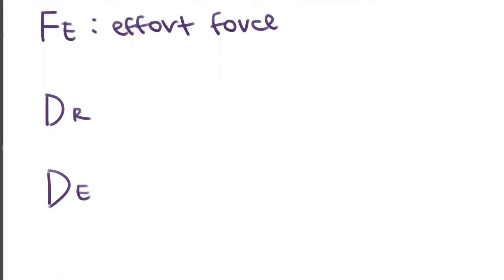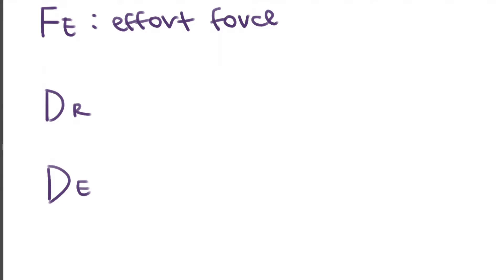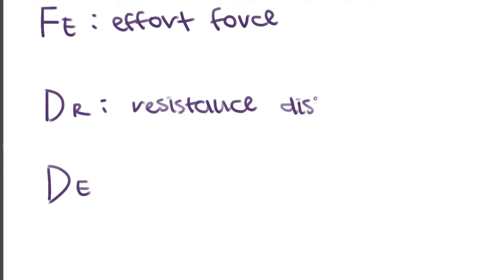Then we can move on to the distances. DR is the resistance distance, basically the distance to where the resistance force is being applied. DE is the distance to the position where the effort force is being applied.